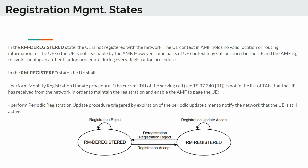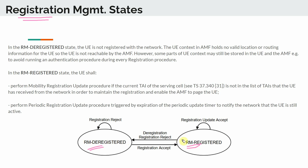In this section we will talk about the registration management states in the 5G core. There are two states: RM-Deregistered and RM-Registered, and the UE goes back and forth between each of these states.